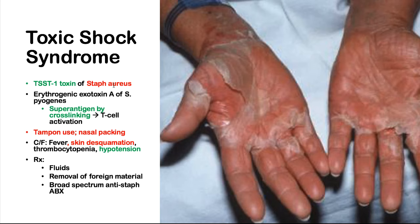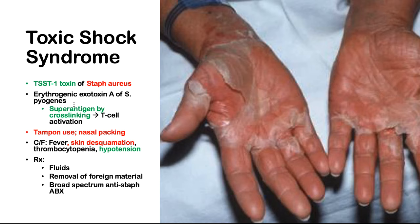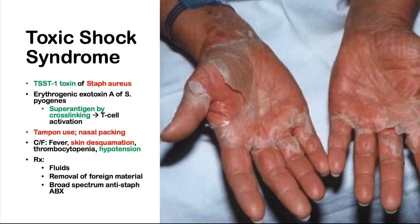Toxic shock syndrome: caused by the TSS-T1 toxin of Staph aureus or erythrogenic exotoxin A from Strep pyogenes. Both act as superantigens, cross-linking and activating massive T-cell responses. Group A strep causes more necrotizing disease; staph aureus causes skin peeling. Both present with hypotension and thrombocytopenia. Fever associated with tampon use or nasal packing points to staph aureus. Treatment includes fluids, removal of the foreign body, and broad-spectrum anti-staph antibiotics.